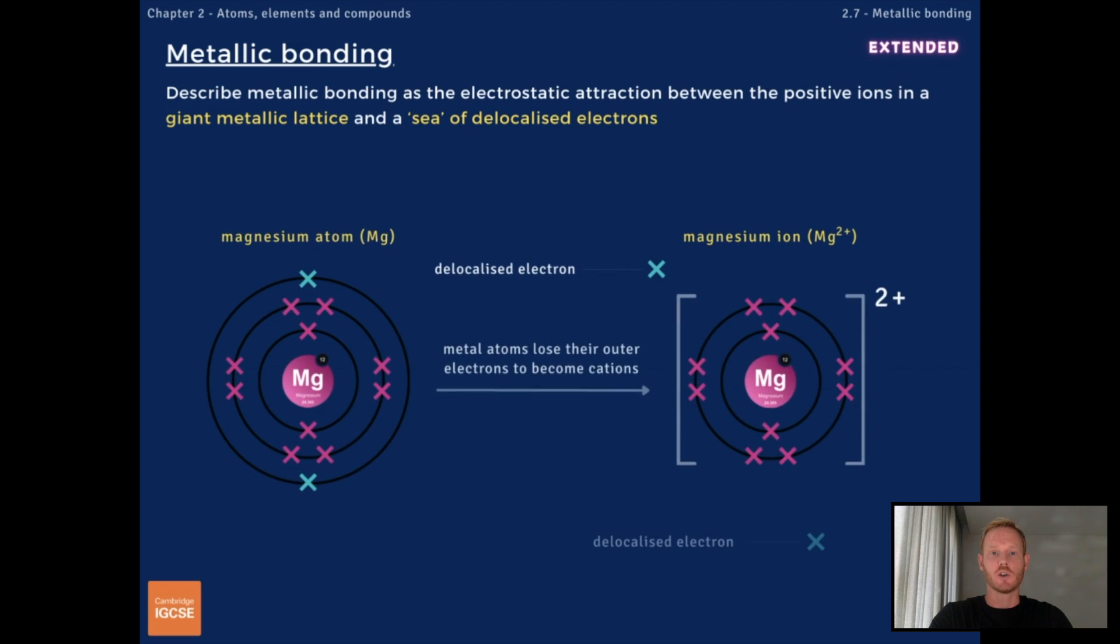As we learned in topic 2.4, metal atoms lose their outer shell electrons to become positive ions or cations. For example, a group 2 magnesium atom loses two electrons to achieve a full outer shell, so a magnesium ion has a charge of plus two.